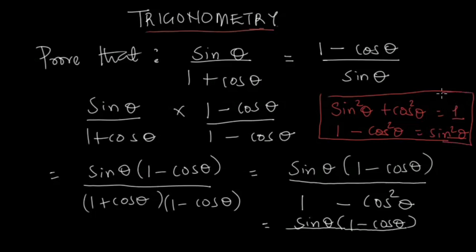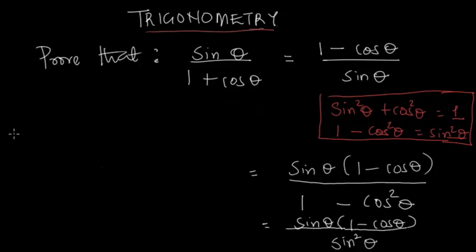So we're going to come here and replace 1 minus cos² θ with sin² θ. I'm going to clear out this part now. So we have this to be equal to sin² θ divided by... sin θ divided by sin² θ.